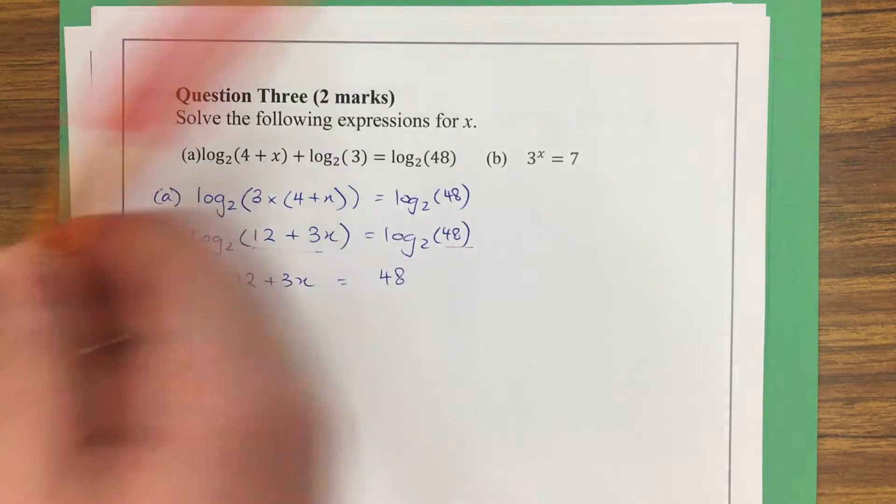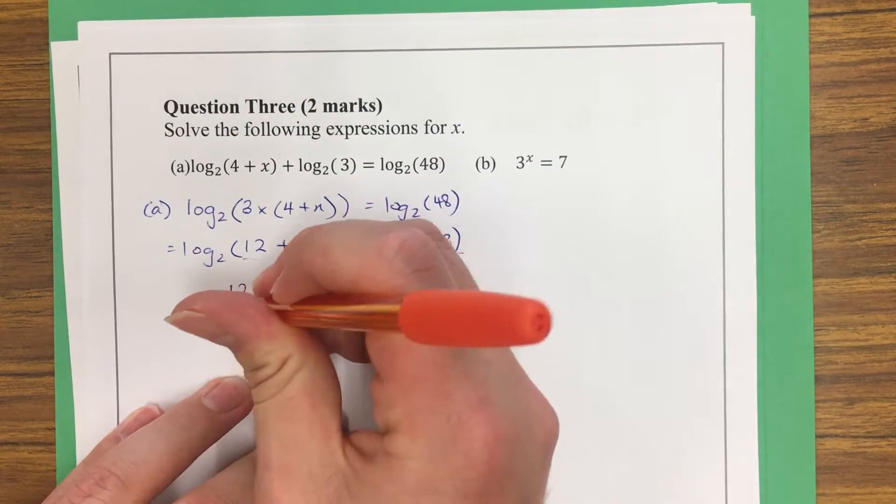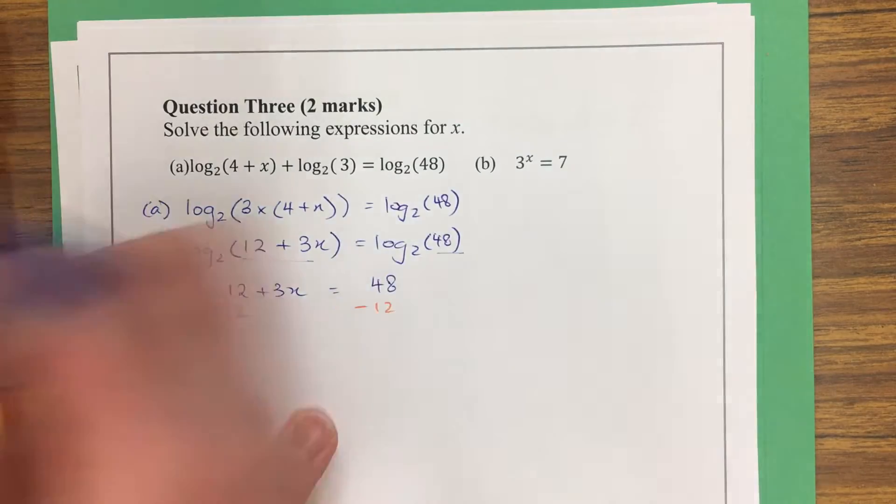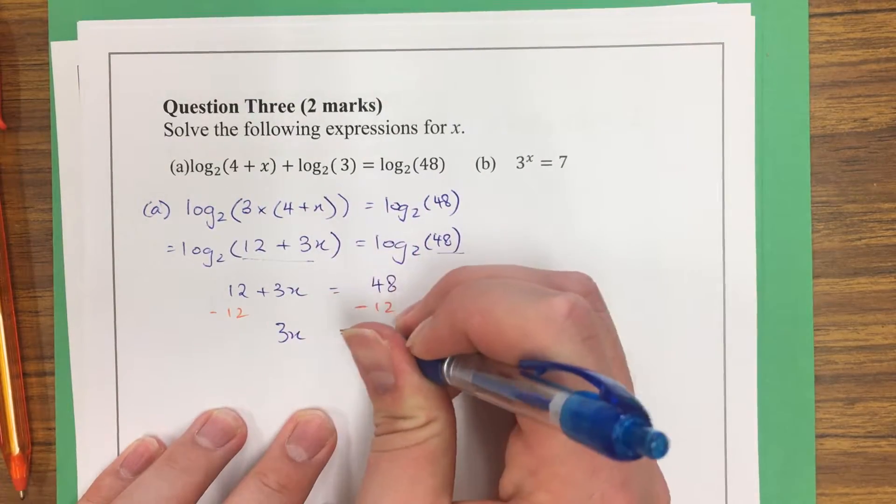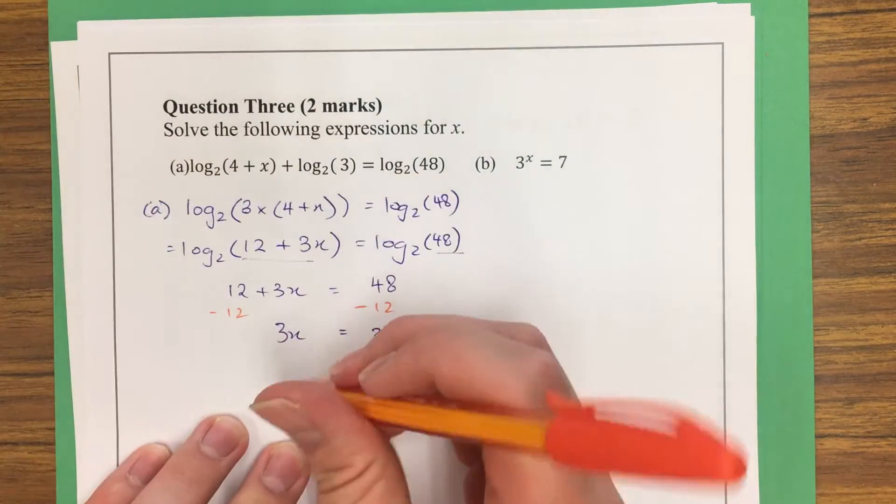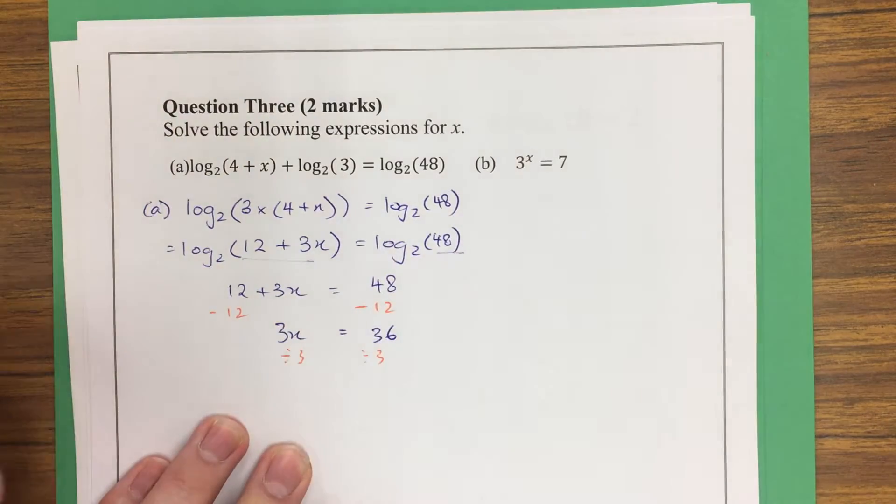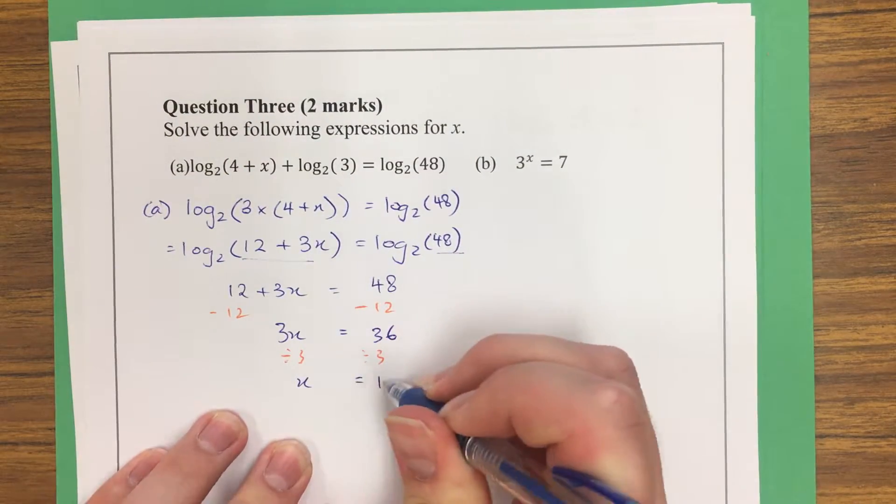You would minus 12 on both sides. 3x is equal to 36. Divide both sides by 3. x is equal to 12.